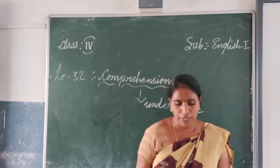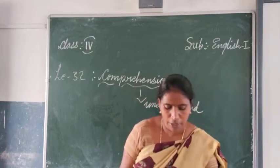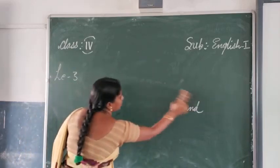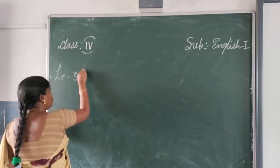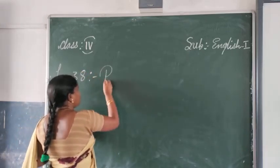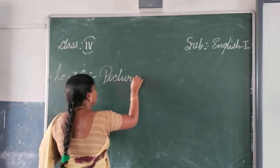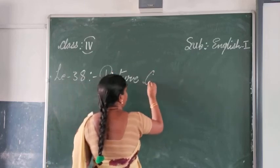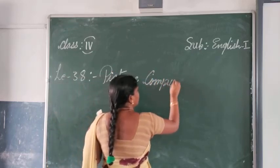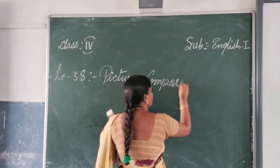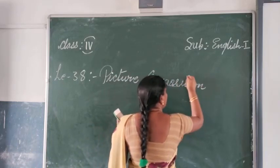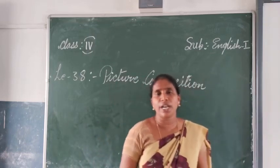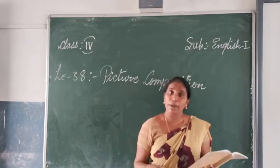The next topic is picture composition, lesson number 38. In picture composition, they will give you short pictures of different kinds. You have to look at the picture and write 8 to 10 lines in your own words.